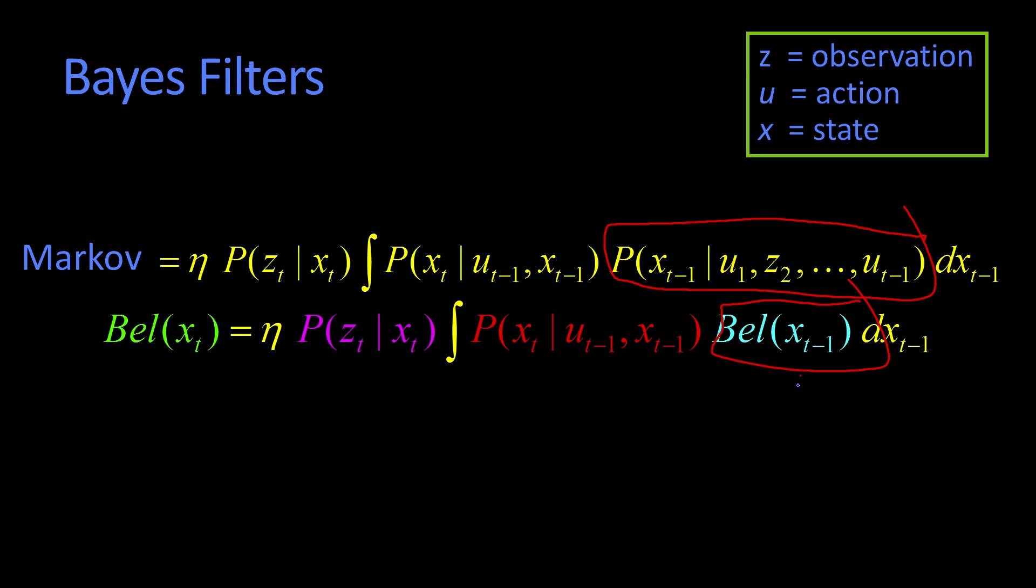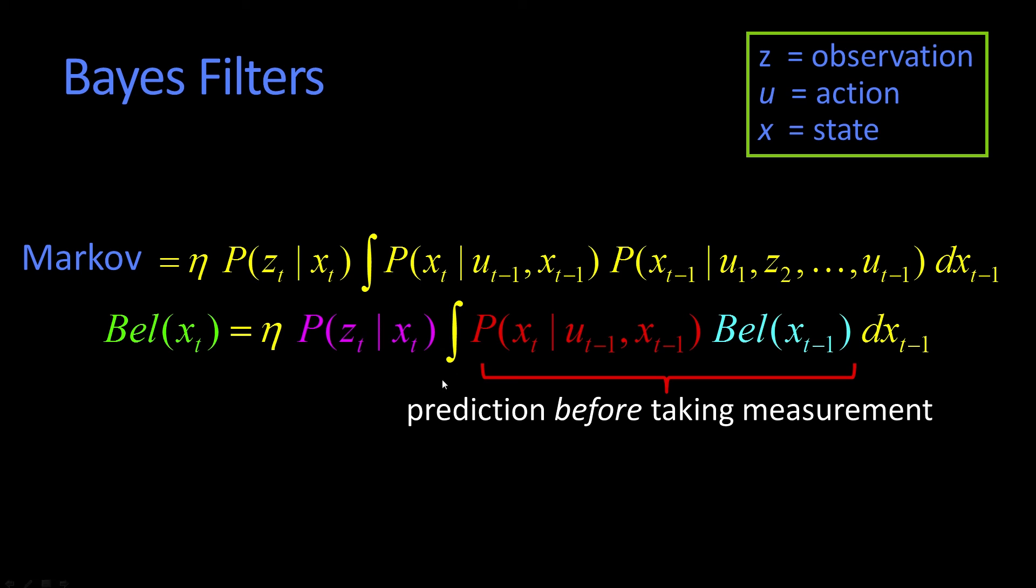So now we're already looking at a recursive algorithm. Because on the left-hand side, we have the belief of xt. On the right-hand side, we have the belief of xt minus 1. So this is induction. Remember we talked about tracking as induction. This is an induction formula that goes from your belief at t minus 1 to your belief at t. When you integrate or sum over all the possible xt minus 1s, these are your predictions before taking the measurement.